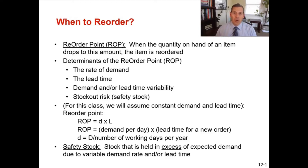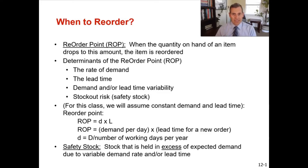In this short video, we are going to discuss the reorder point. Up to this point in the chapter, we've talked about an economic order quantity or an economic production quantity, and that calculation tells us how many pieces to make or to buy of something. The reorder point tells us when to buy it. It's a very simple calculation, easy to use, and you can use this calculation with or without a buffer for safety stock.